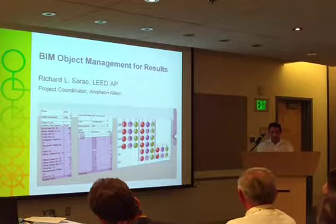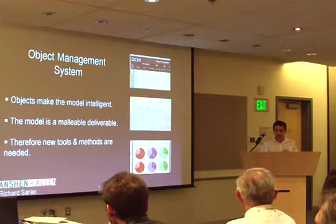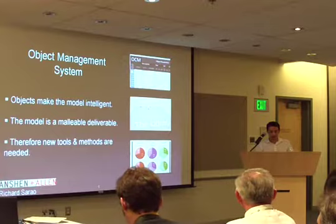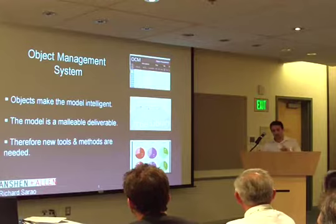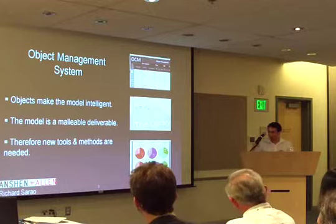Asking what BIM means — what does it mean to build an information model? We're realizing that our model is actually very malleable, and it is the objects in the model that make it malleable. So we created an object management system to help us take advantage of that fact and opportunity. What we found is that good BIM models function as they do because they rely on the consistent use of intelligent objects.